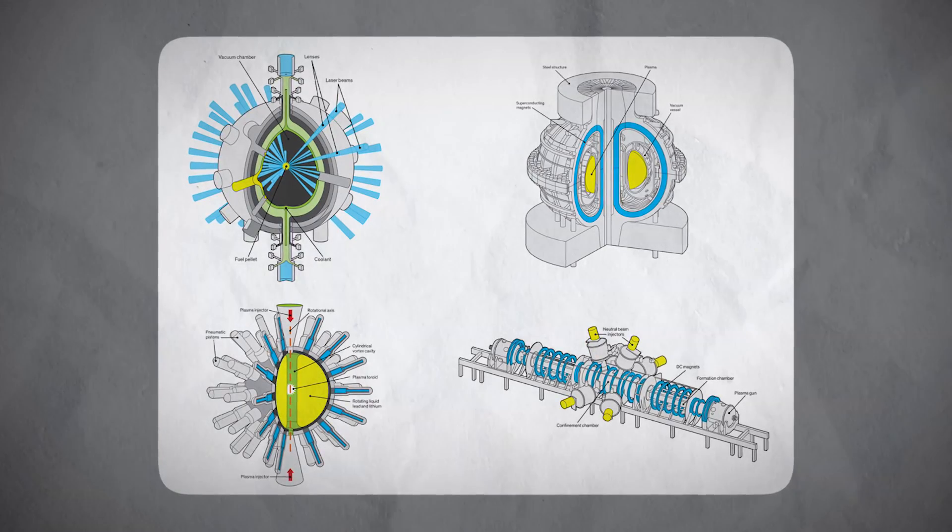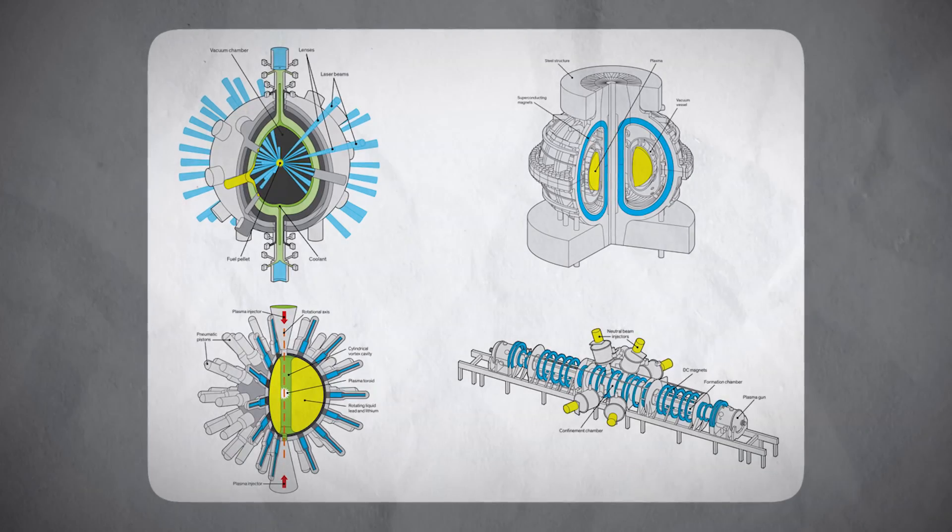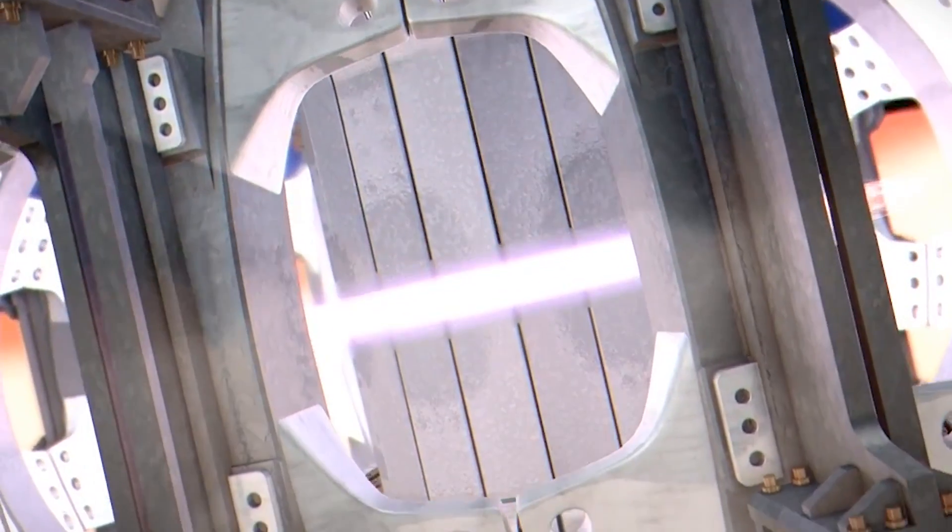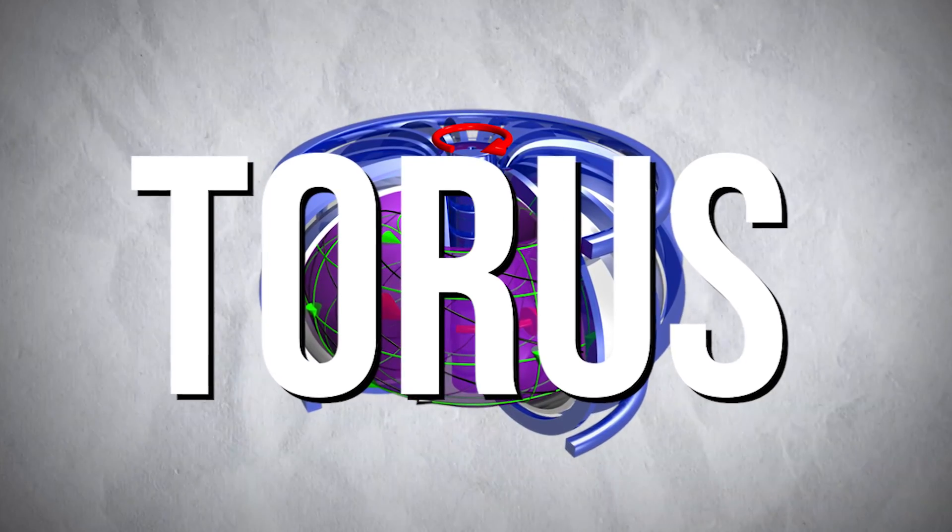Although many methods and types of nuclear fusion exist, this video will focus on fusion in a tokamak reactor. These hold the extremely hot plasma in a shape which famously resembles a donut, known as a torus.